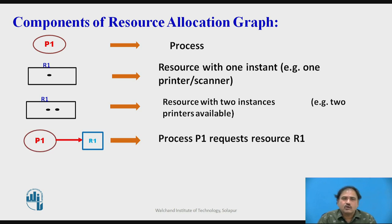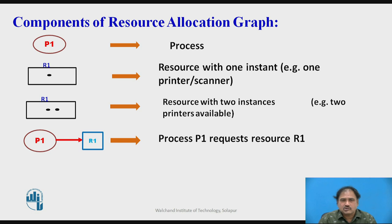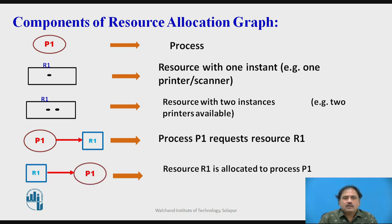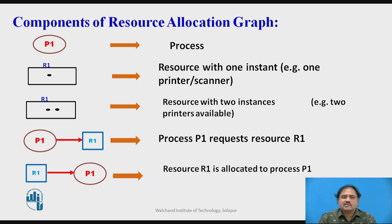There are two types of arrows in the RAG. If P1 has an arrow pointing towards R1, it means P1 requires resource R1 for its execution — this is a request edge. On the other hand, if R1 has an arrow going towards P1, it means resource R1 is allocated to process P1 — this is an assignment edge. We use all these symbols to draw a resource allocation graph that represents the states of process execution.